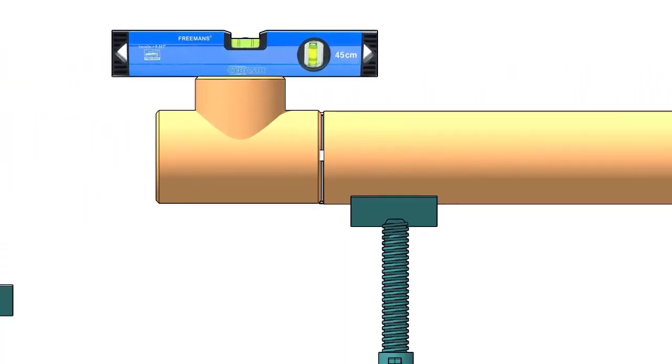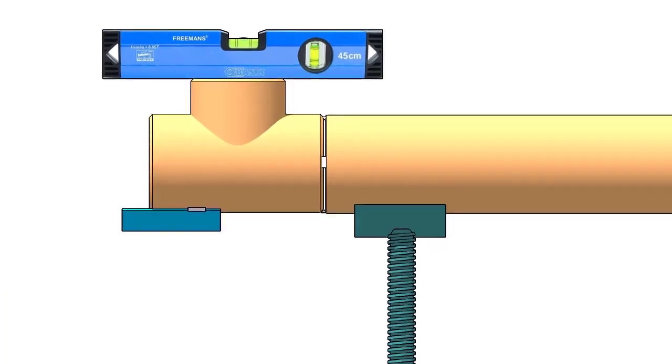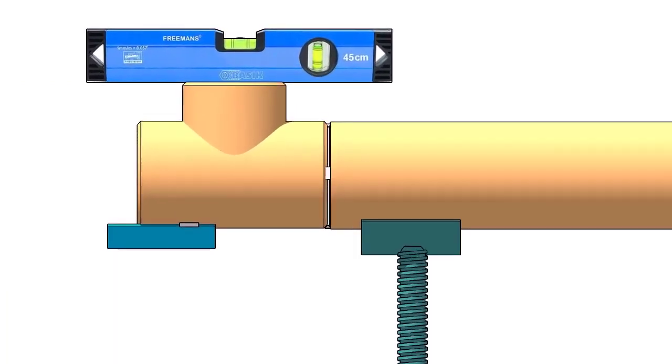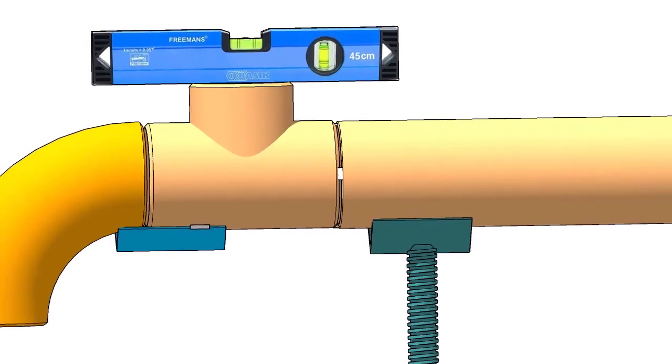Tack weld the piece of angle below the tee if you don't have a ready-made pipe clamp. The size of the angle cleat may vary according to the size of the elbow. Here I am using a 50-50 angle because the pipe dia is 6-inch.